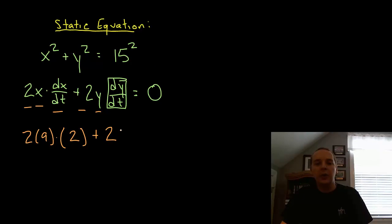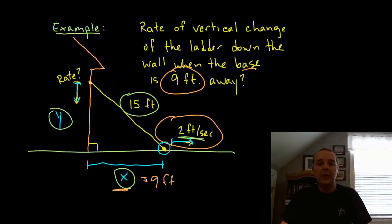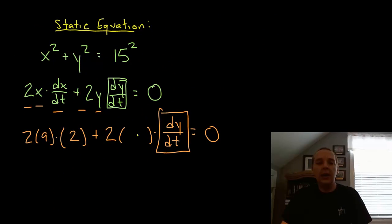And then we have 2 times y, whatever that may be, times our mystery quantity dy/dt. I know that's a variable, I'm going to leave that like it is, equals 0. Now this is a very common thing that happens. You fill in everything that you see or have been given - the 15, the 9, the 2 - I don't see any other numbers. And sometimes you will have one last quantity, and you say, oh well, they didn't give me enough information. In a roundabout way they did. What is y?